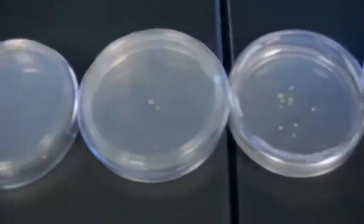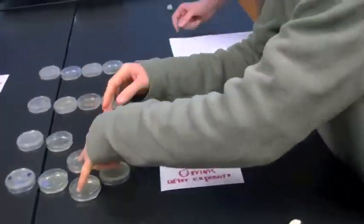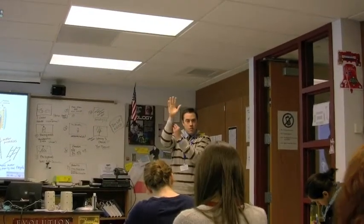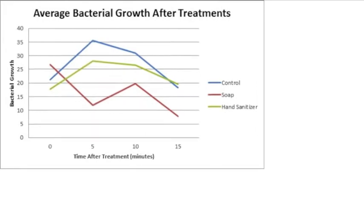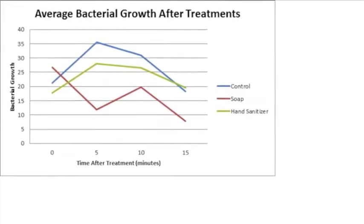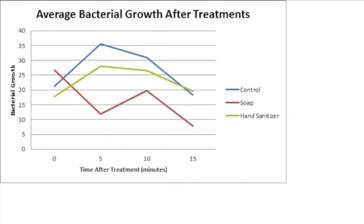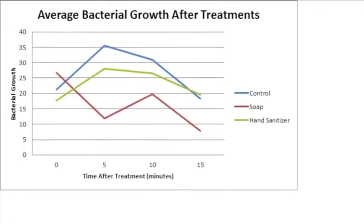And here are our results. So now that we're done with our experiment, which antibacterial agent was more effective? The triclosan-based soap or the alcohol-based sanitizer?